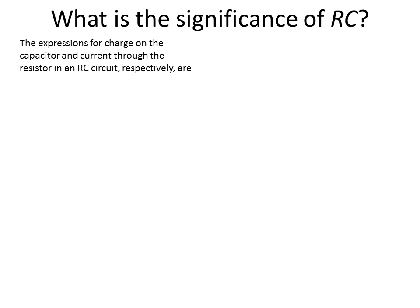We saw before the expression that we used when we got this RC value was for charge. The charge on the capacitor was given by the voltage times the capacitance times the quantity one minus e to the minus t over RC. You see this value of RC show up here.